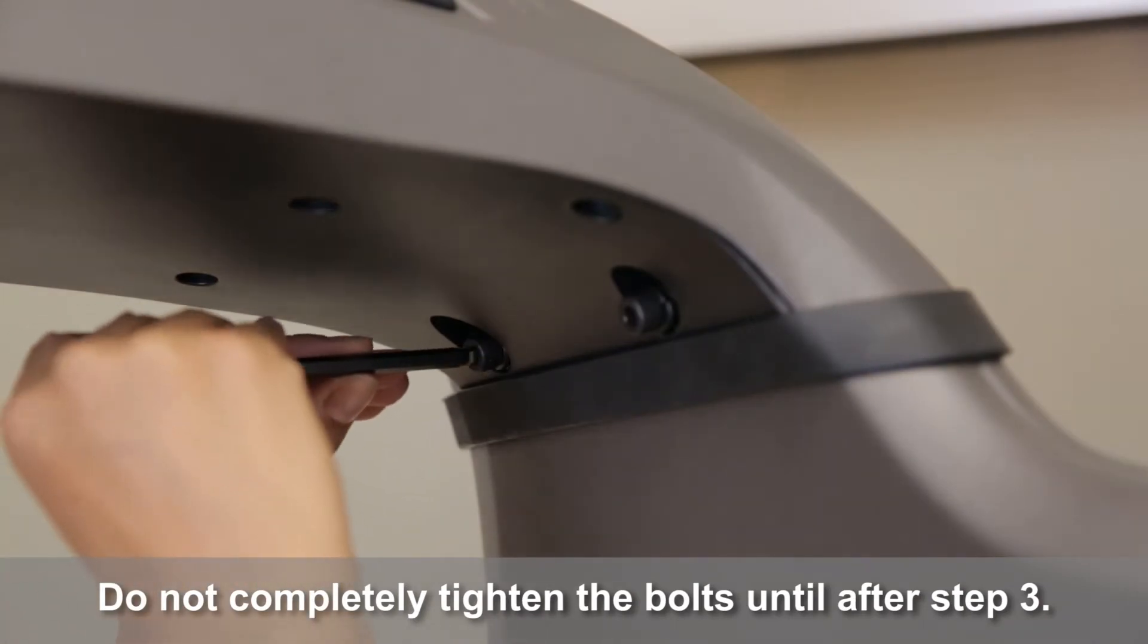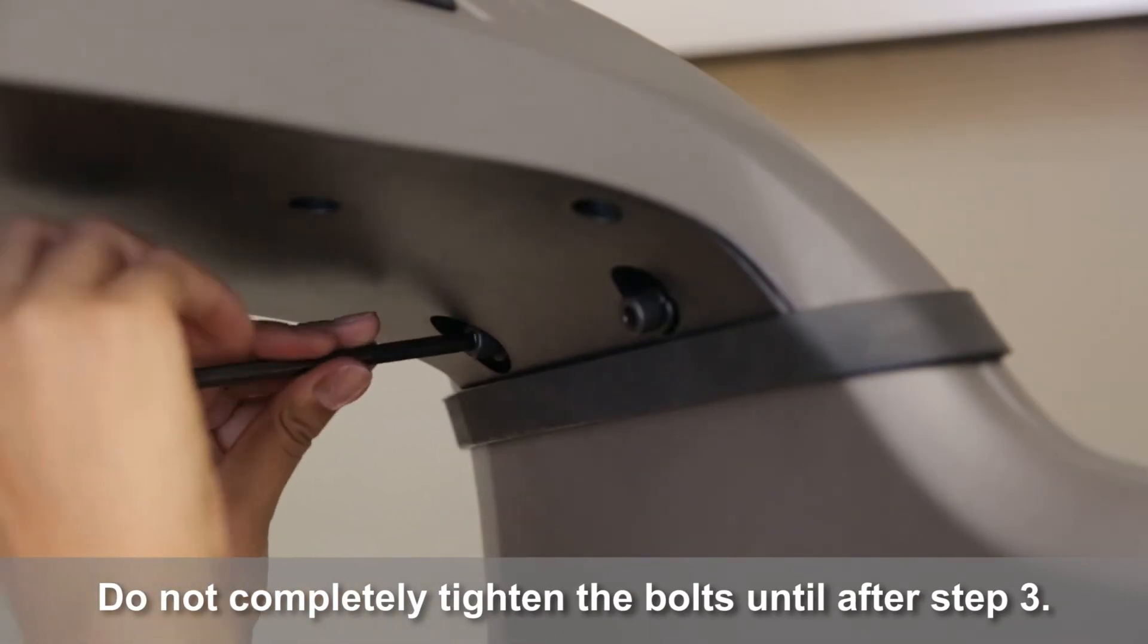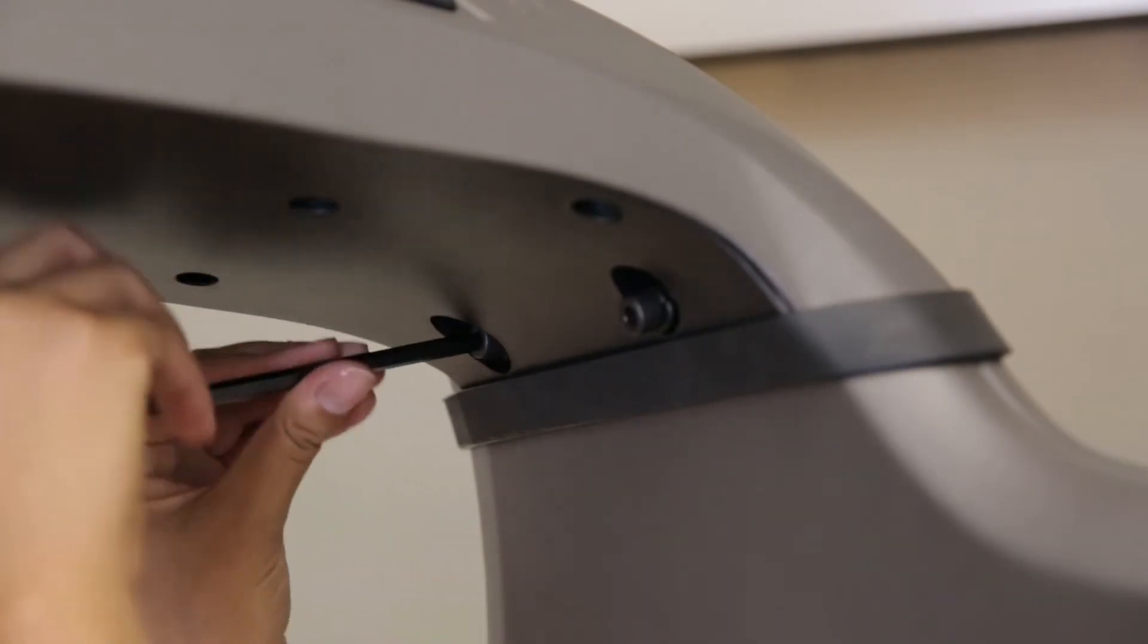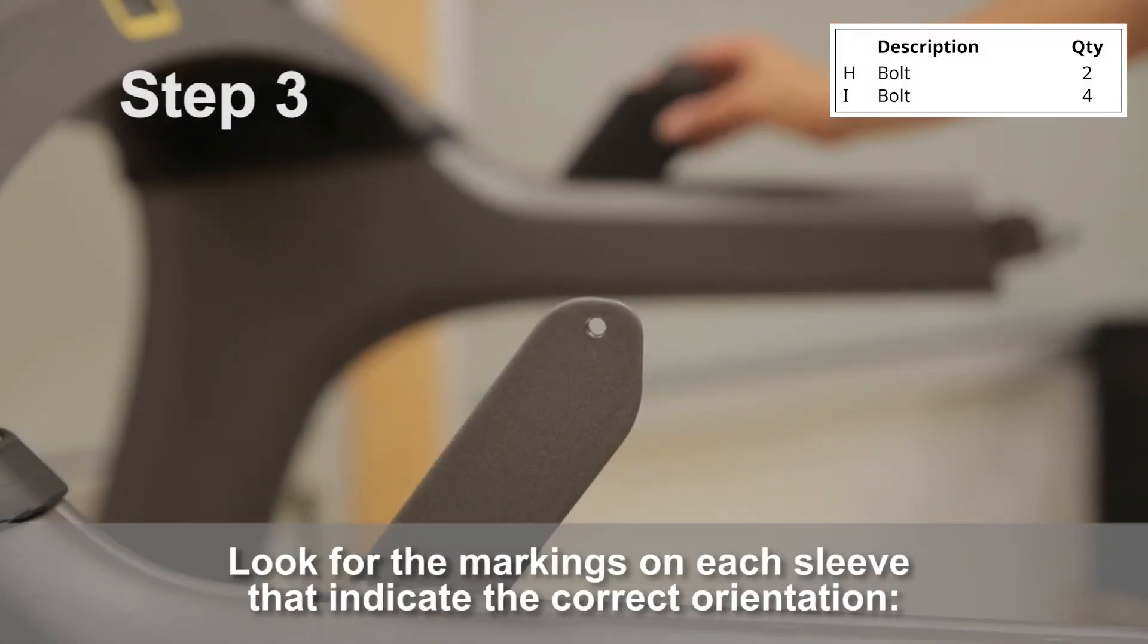With a 6mm Allen wrench, attach the console base to the console masts. Place the left and right handlebar sleeves onto the console masts.